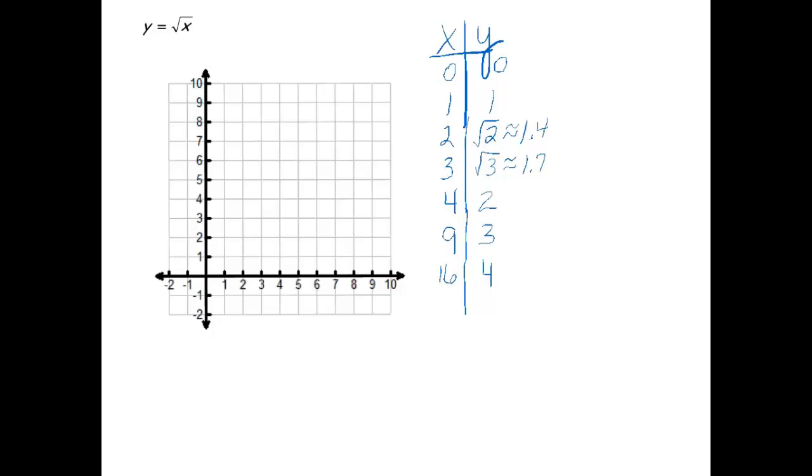So I'm going to graph these values. So we have a point at 0, 0, 1, 1, 4, 2, and 9, 3.